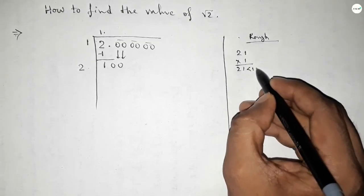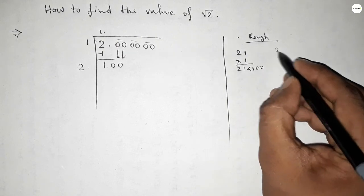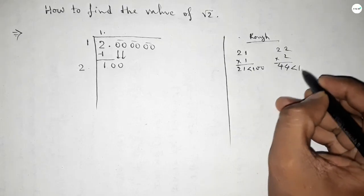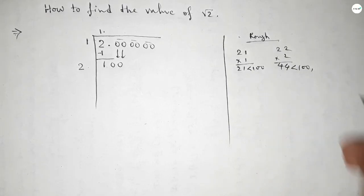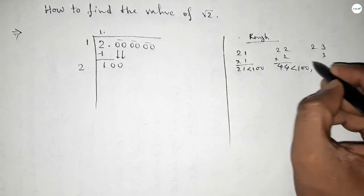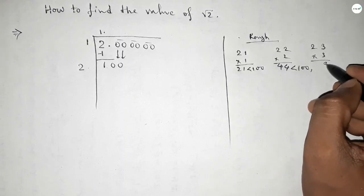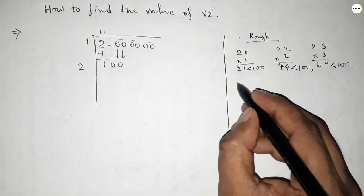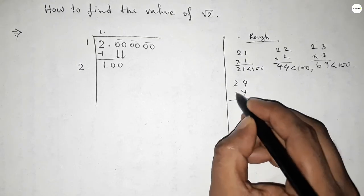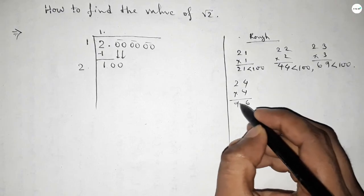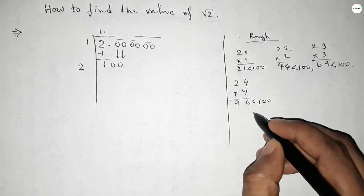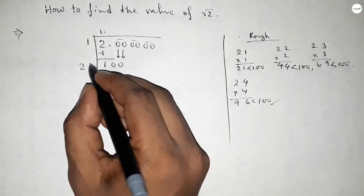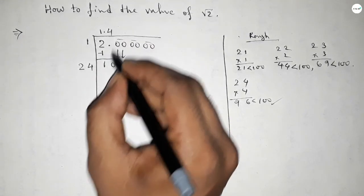Beside 2, what should we put here to get near 100? If you put here 1, then 21 is less than 100. If you put 2 here, then this is 44, which is less than 100. But we should take almost near 100. So if you put 3, this is less than 100 but not almost 100. If you put 4, then this is almost near 100.